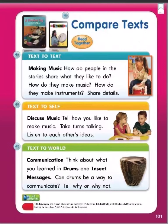Compare texts. Text to text: making music. How do people in the stories share what they like to do? How do they make music? How do they make instruments? Share details. Text to self: discuss music. Tell how you like to make music. Take turns talking. Listen to each other's ideas. Text to world: communication. Think about what you learn in Drums and Insect Messages. Can drums be a way to communicate? Tell why or why not.